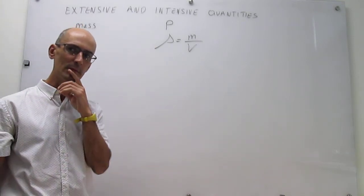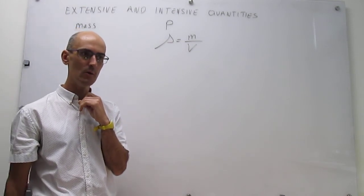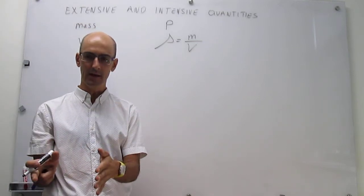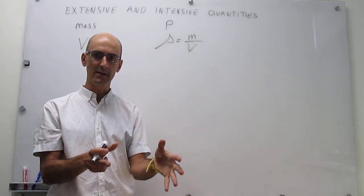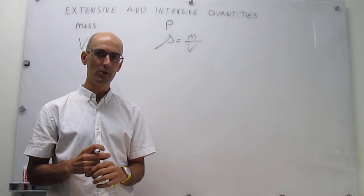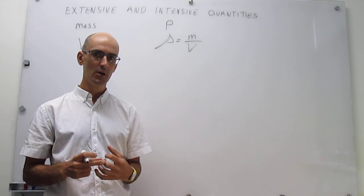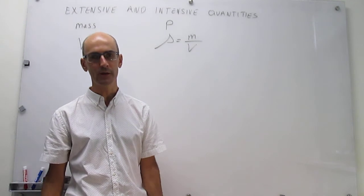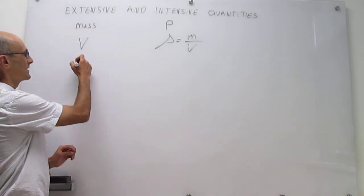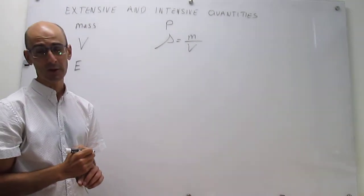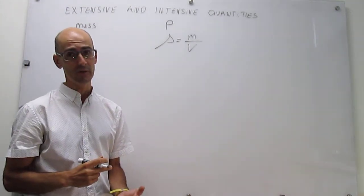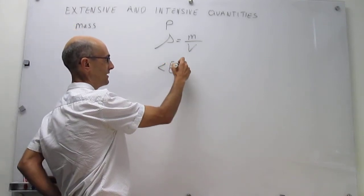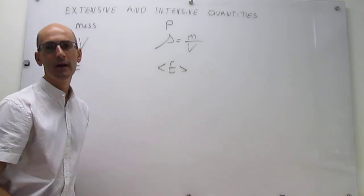So let's think a little bit maybe about energy. When you think about energy, kinetic energy for example, let's take a gas container that is identical with another gas container and lift the wall. Notice that the total energy would actually increase because you have many more particles, twice the particles. So energy in itself is actually an extensive quantity. However, if we talk about average energy, average energy would not depend on the system size. So when you take average energy, that will be an intensive quantity.